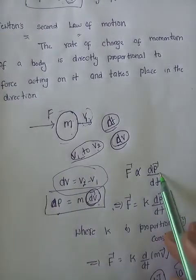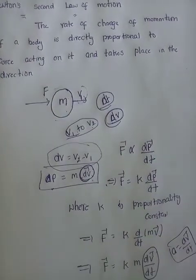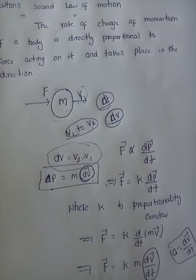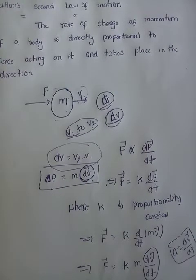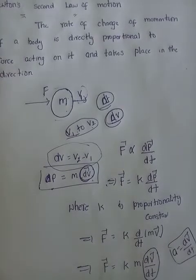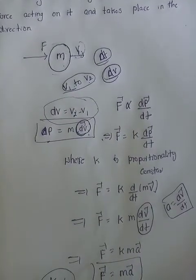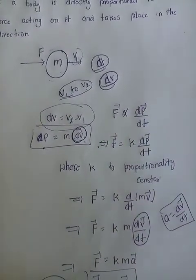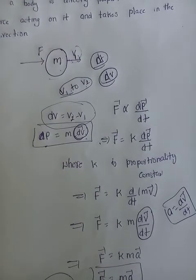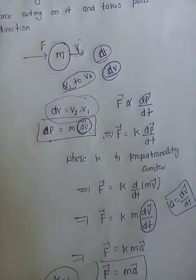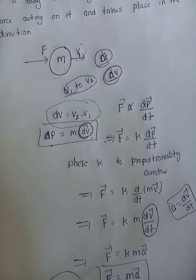According to Newton's second law, F is directly proportional to dv/dt, which implies F equals k times dv/dt. Substituting, F equals k times m times dv/dt. Rate of change of velocity is acceleration, so F equals m times a. The SI unit of force is Newton, represented by capital N.